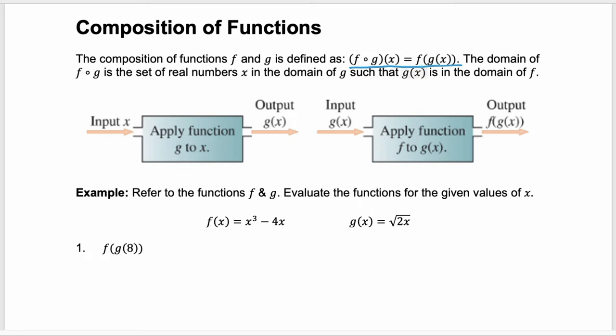Remember that a function is like a machine. So look at our image. We start with an input x. It goes into our first function, our innermost function g, and the output we get is g of x. With a composition, we take that output g of x, and it's our input into our next function f, and we get the output f of g of x.